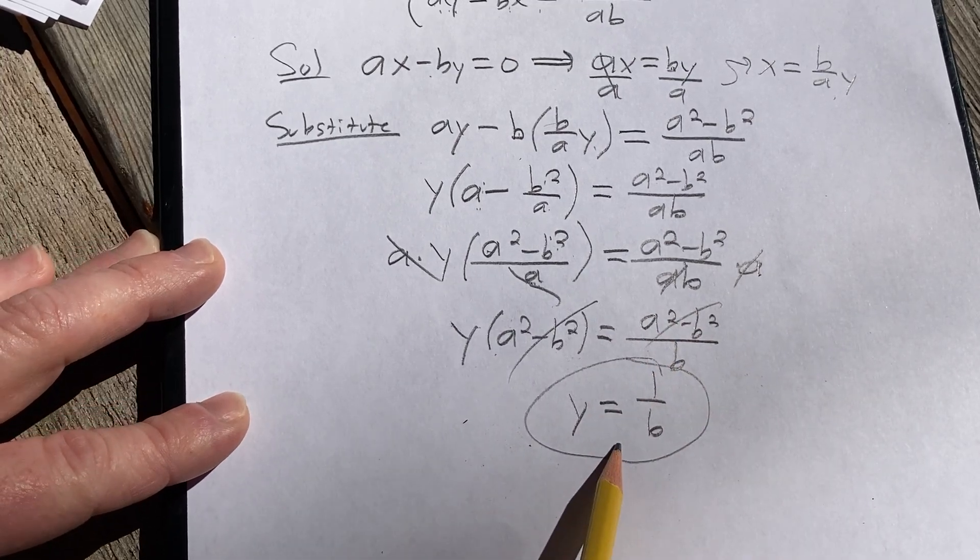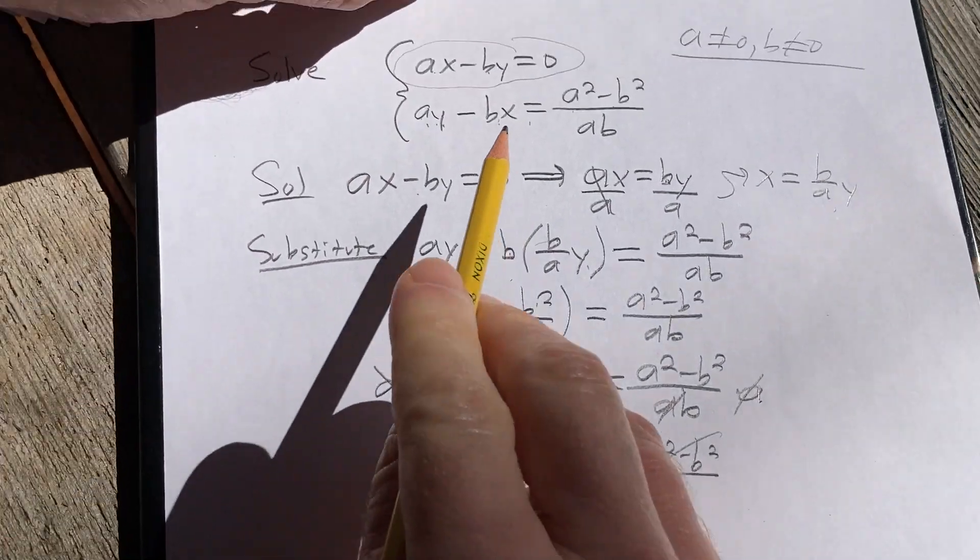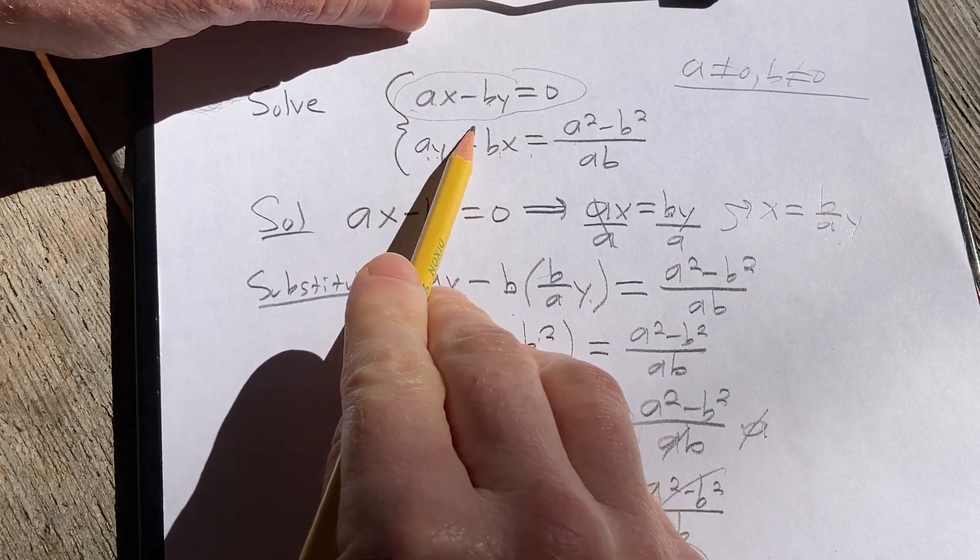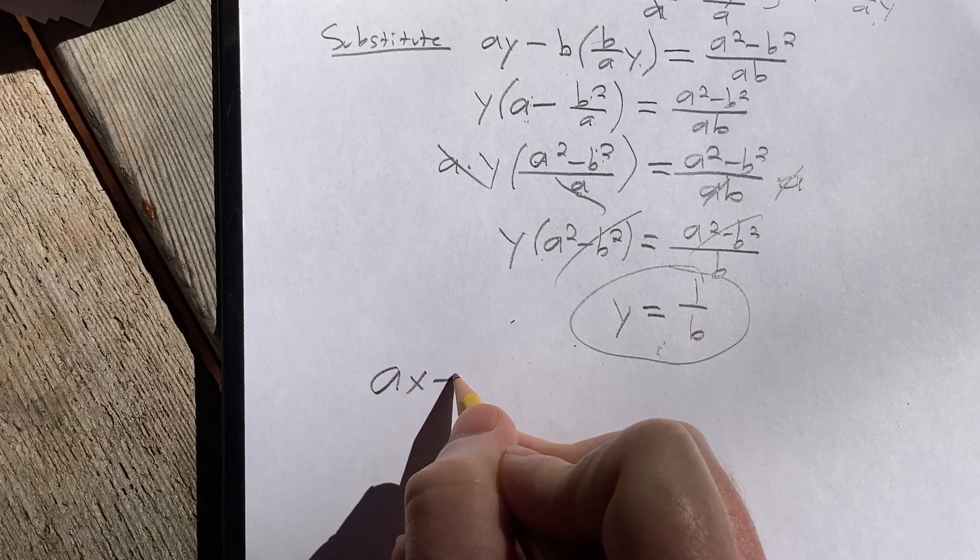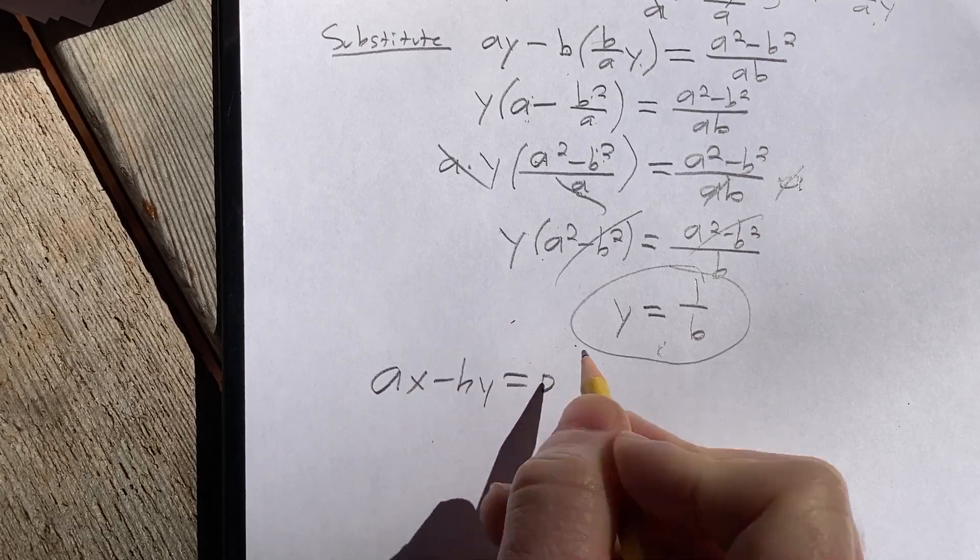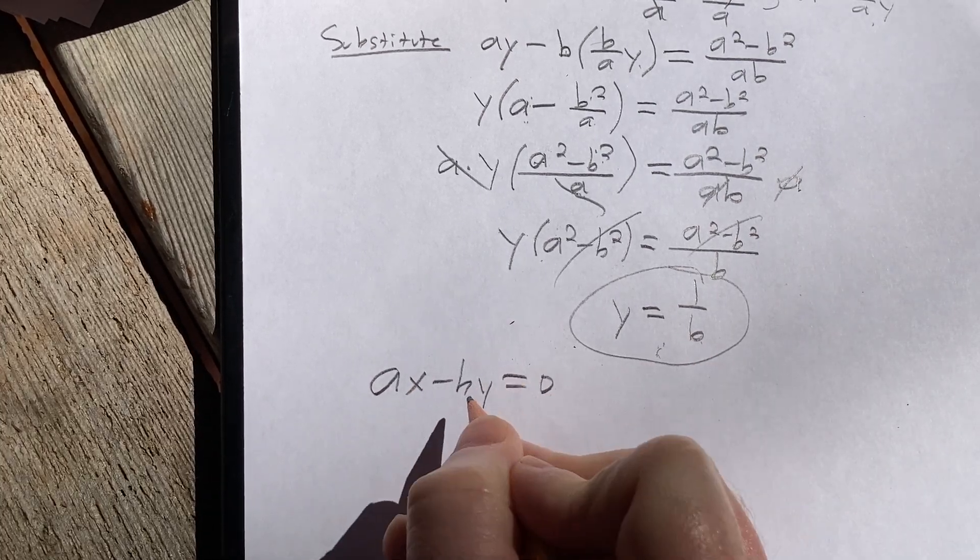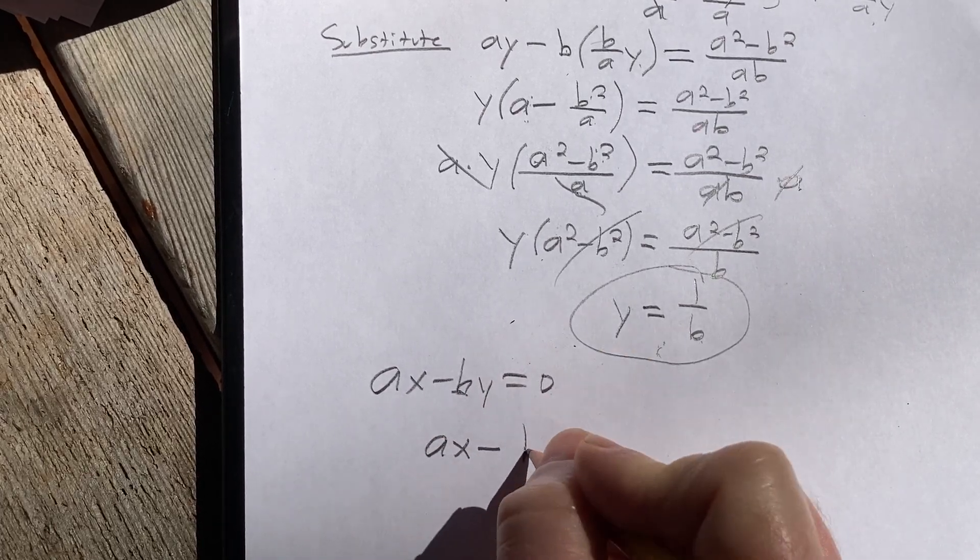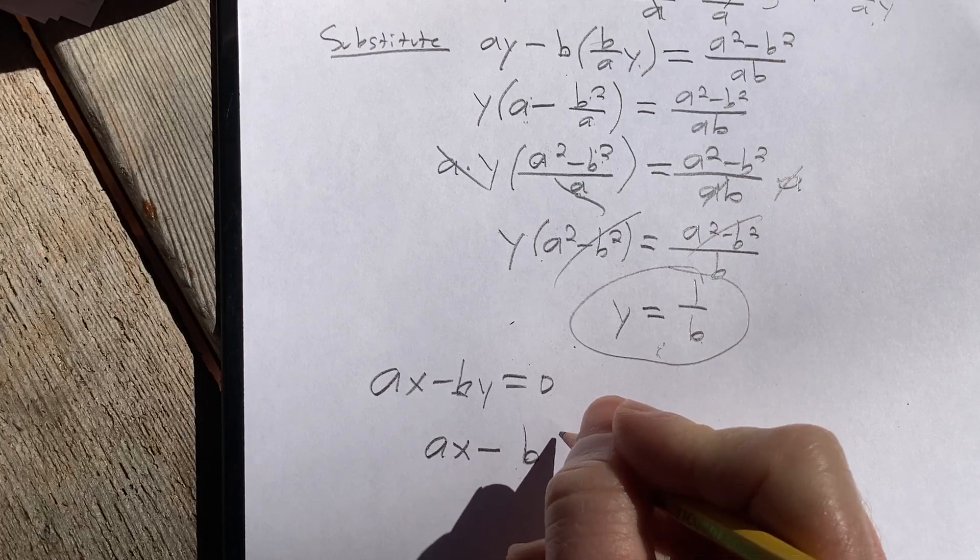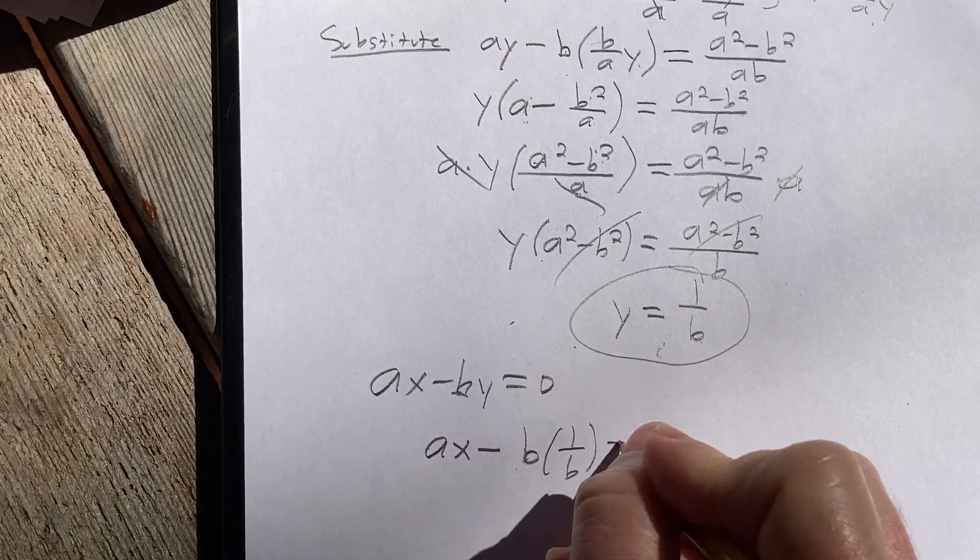Now we can take y and plug it into the first equation, which is ax minus by equals zero. So recall we had ax minus by equals zero. And now we can plug in the value of y. So it'll be ax minus b, and then y is one over b.